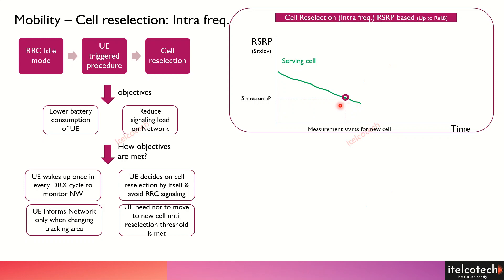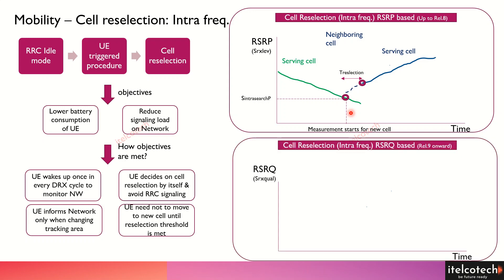Once the UE has seen that it has dropped below this particular threshold for a particular time — which is T-reselection — and it senses that there is another serving cell which has a better signal strength, then it will shift to that particular cell. This is how the reselection happens.